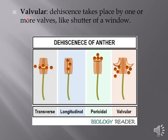The fourth type of dehiscence is valvular dehiscence, which takes place by one or more walls opening like the shutter of a window. Here we have an image showing all four types of dehiscence methods of the anther: transverse dehiscence where bursting takes place transversely, longitudinal dehiscence where bursting of the anther lobe is in a longitudinal direction, poricidal dehiscence where bursting is through pores, and valvular dehiscence.